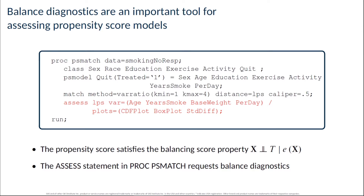Part of what makes the propensity score a natural basis for formulating a matching problem is that it has the so-called balancing score property. Formally, the balancing score property means that conditioned on the propensity score, the treatment t and variables x should be independent. In practice, this means that you should see balanced treatment conditions given a good propensity score model and proper adjustment. So balanced diagnostics, not predictive accuracy, are the most important tool for assessing a propensity score model.